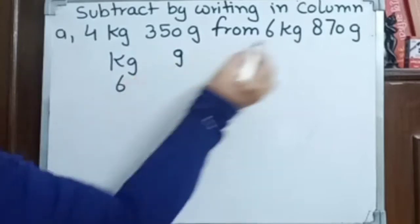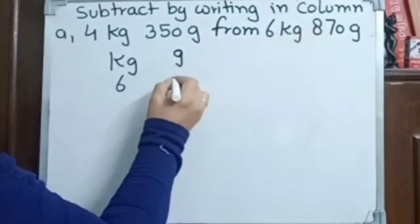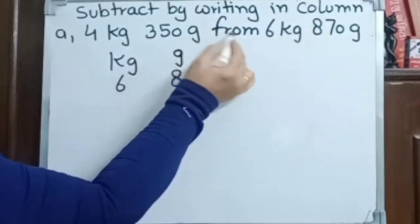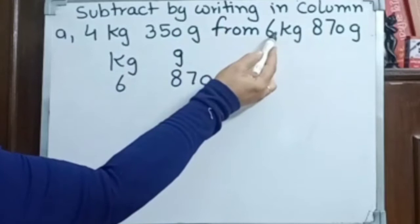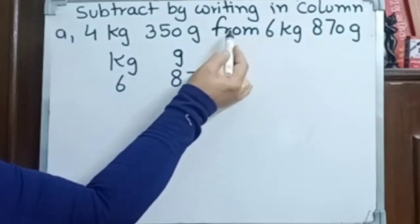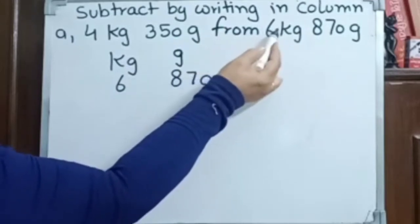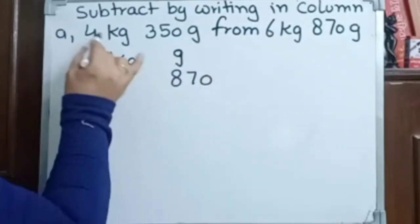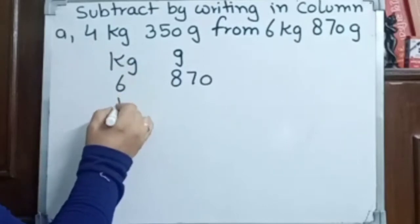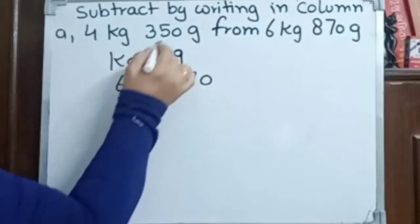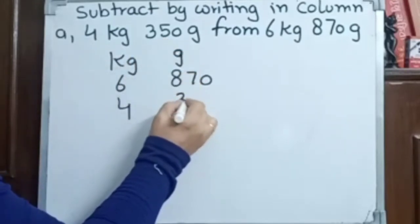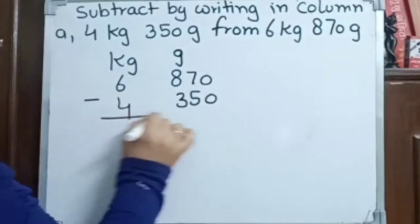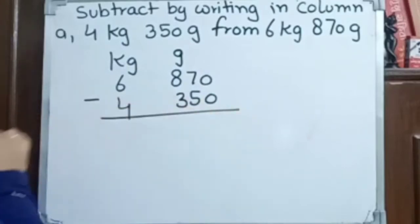We have 6 kilogram 870 gram. 'From' means the bigger number, and whatever comes after 'from' will be on the upper side. Now here we have 4 kilogram 350 gram below it. So we have to do the subtraction.